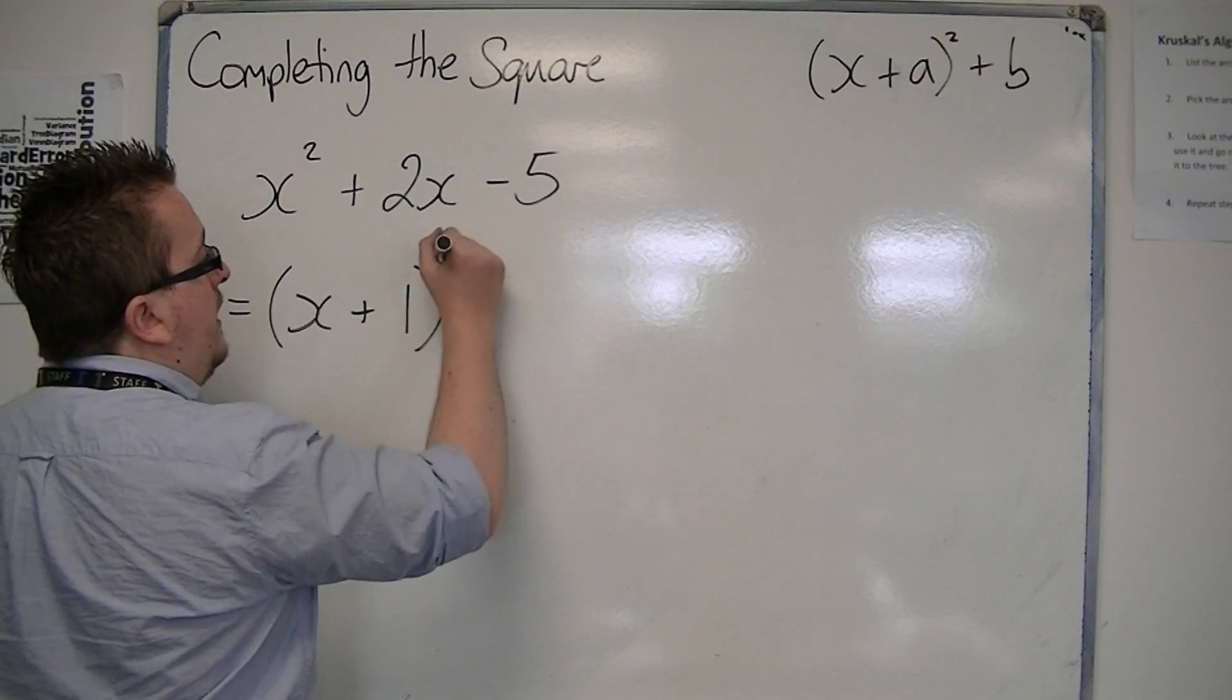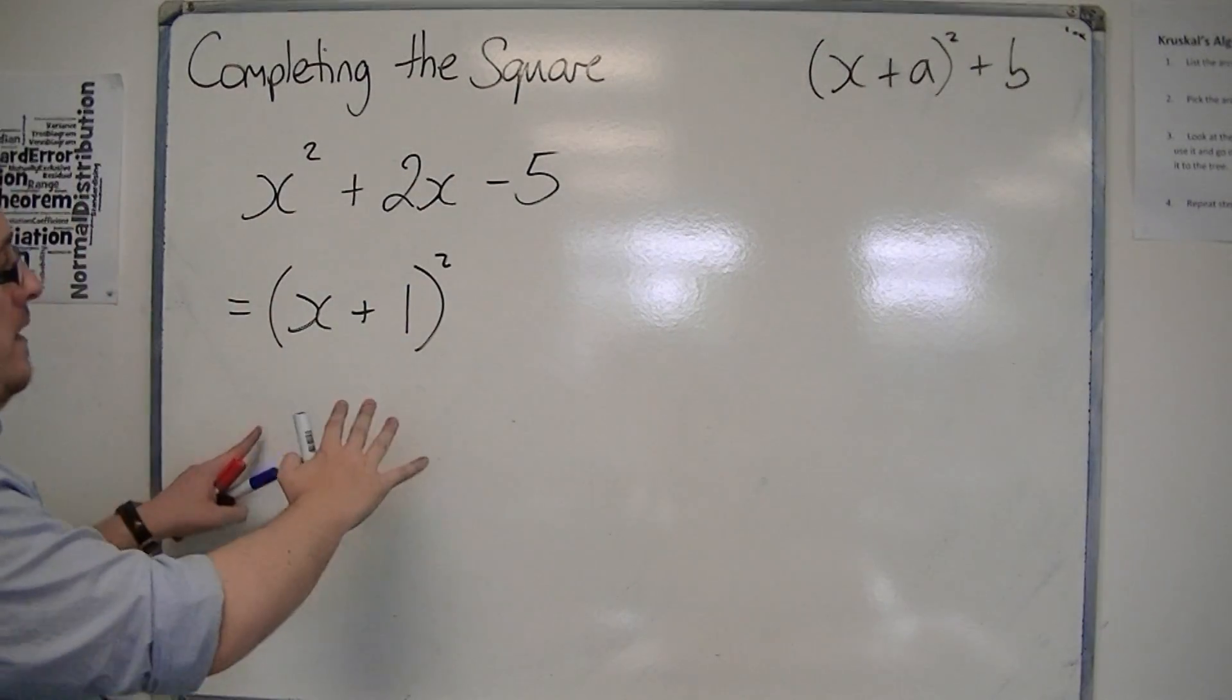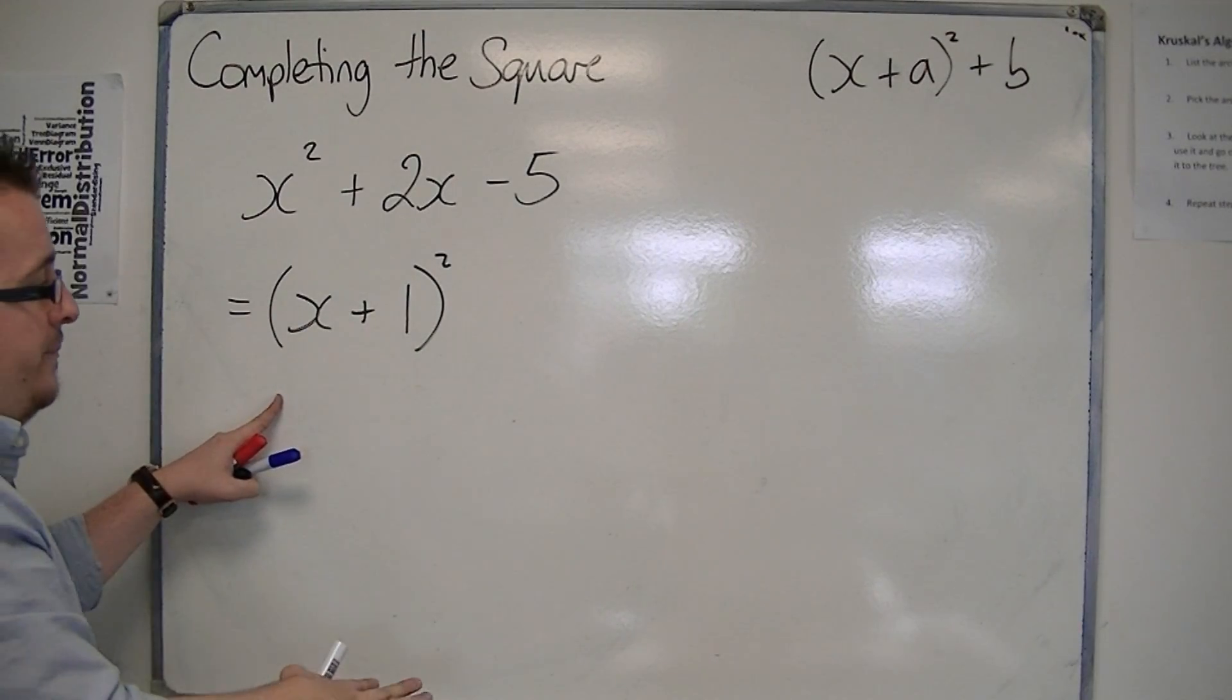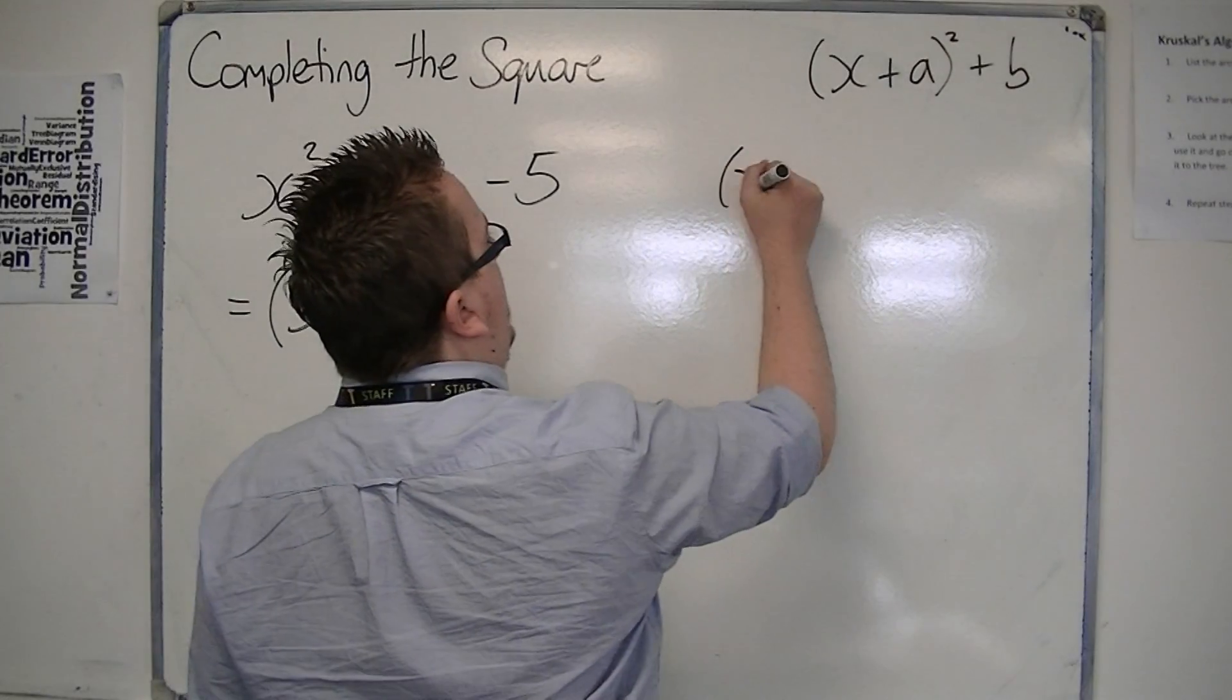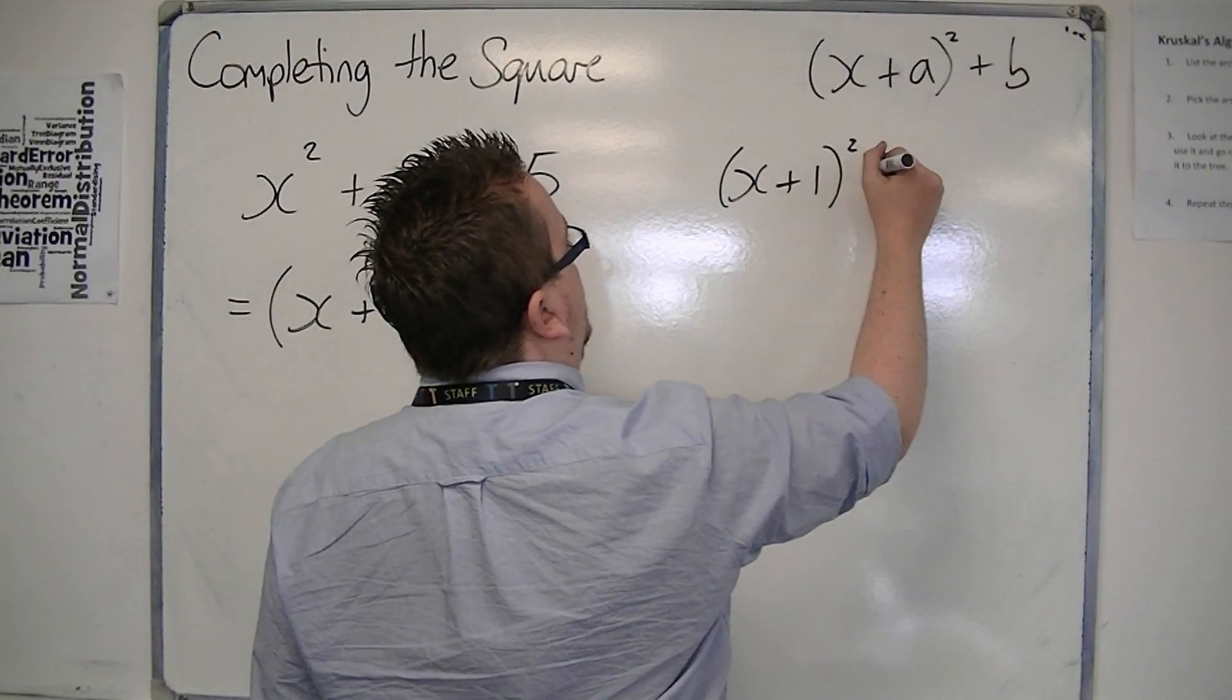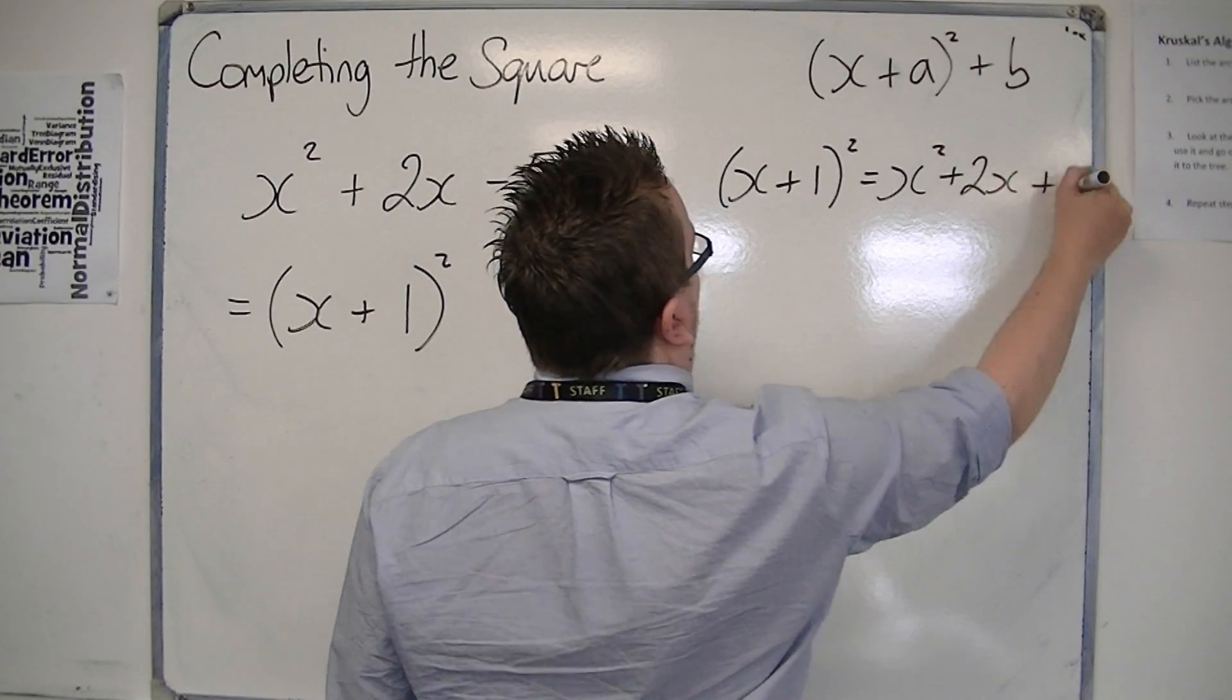And that is what would be the (x + a)² part. So, (x + 1)². Now, when you multiply out (x + 1)², you get x² + 2x + 1.